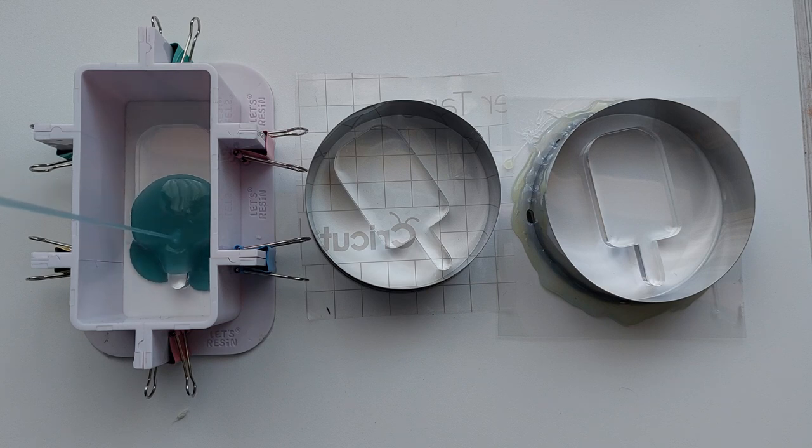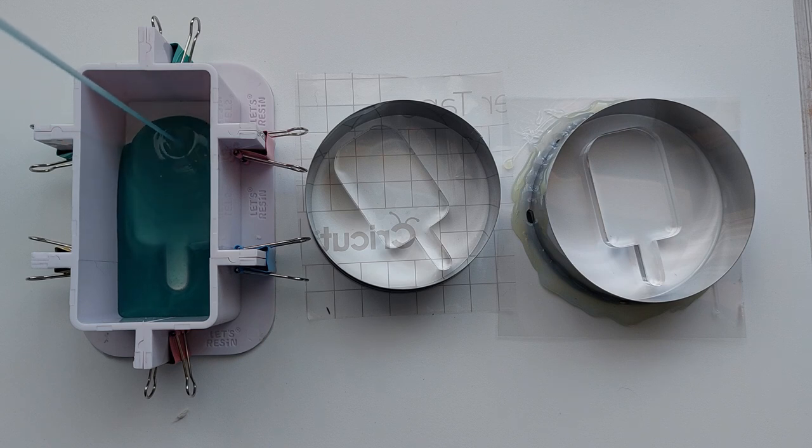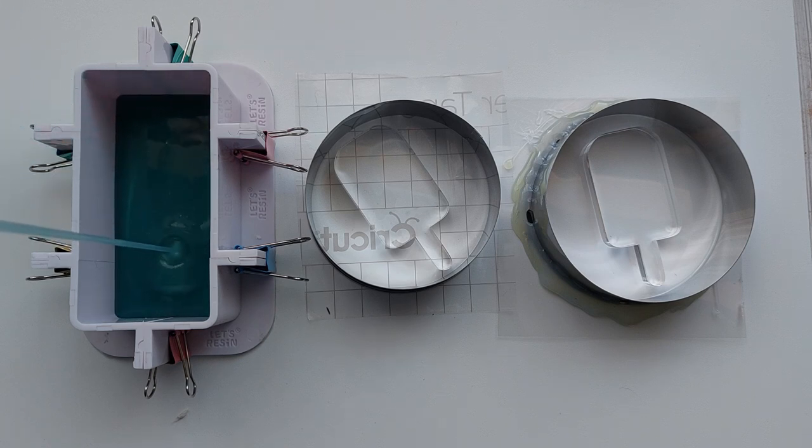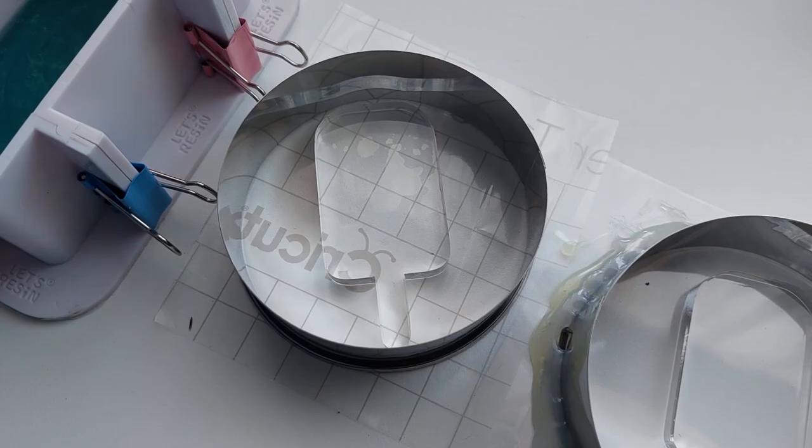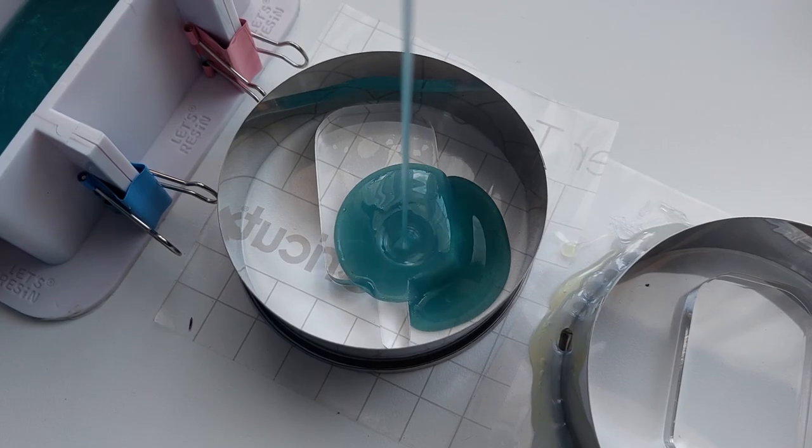Remembering this first one here this is the mold housing by Let's Resin. This has come through for me every time guys. No leaks, absolute perfection. We are pouring from a height of around two foot off the desk to eliminate air bubbles.